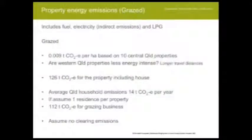Agriculture businesses are quite unique compared to other businesses in that workers and residents are actually housed on the property. You can argue whether residents should be included, whereas teachers or mining workers' residences aren't included in those industries' emissions. Using an average Queensland household emitting about 12 tonnes, if you assume one residence per property you can subtract a little bit. I'm also assuming there are no clearing emissions in this analysis.